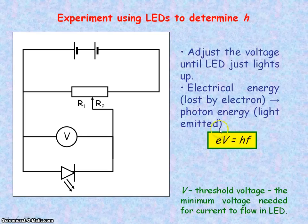We can say that the electrical energy that is lost, that's being transferred by the electrons, is given by the charge of the electron e multiplied by the potential difference V that the electrons moved through. V is the voltage across the LED, which we say is the threshold voltage, the minimum voltage needed for current flow in the LED and for light to be emitted.